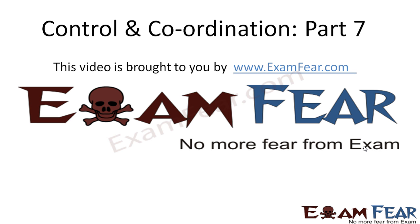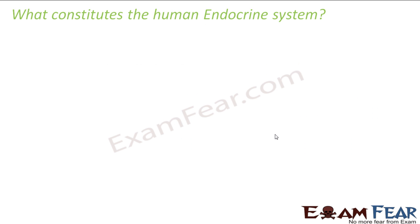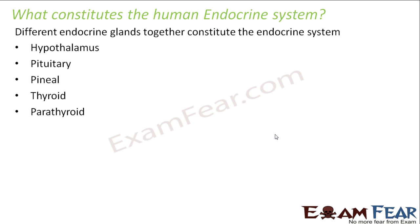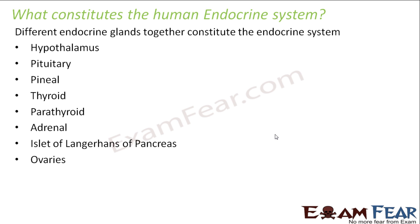This video on control and coordination part 7 is brought to you by examfear.com. Let us study the human endocrine system. The different endocrine glands together form the endocrine system. These are the different endocrine glands present in the human body: hypothalamus, pituitary, pineal, thyroid, parathyroid, adrenal, islets of Langerhans of pancreas, ovaries, and testes.